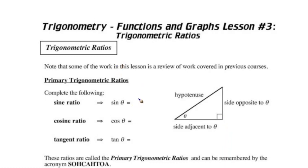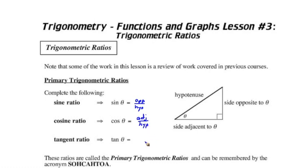So the sine ratio, according to these definitions, is going to be the opposite side over the hypotenuse. For cosine of this angle, we have the adjacent side over the hypotenuse. And for the tangent ratio, we have the opposite side compared to the adjacent side.